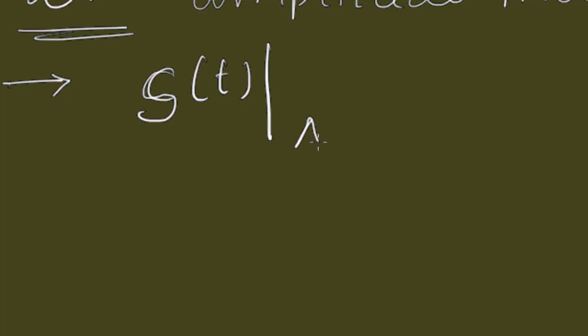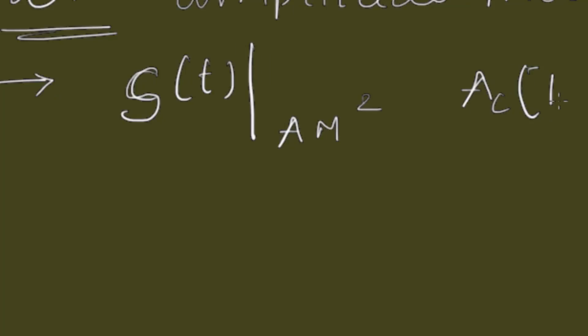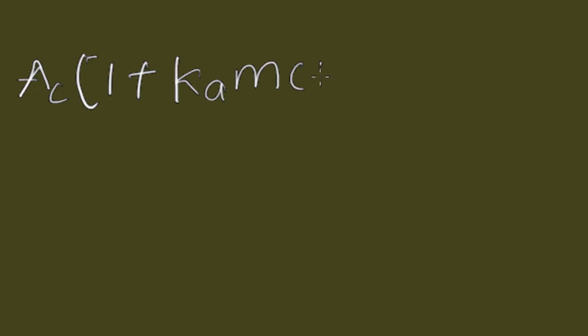Coming to amplitude modulation, that is AM. In case of the amplitude modulation, the amplitude of the carrier is varied according to the message signal, and the time domain representation of AM, this is S(t), AM is equals to Ac into 1 plus KA M(t), cos 2πfct.